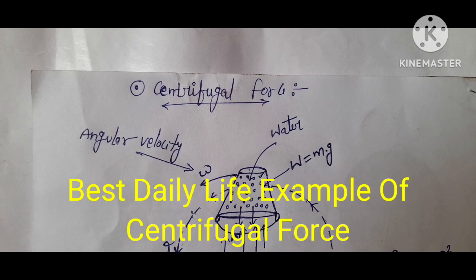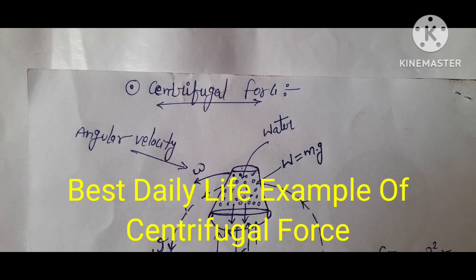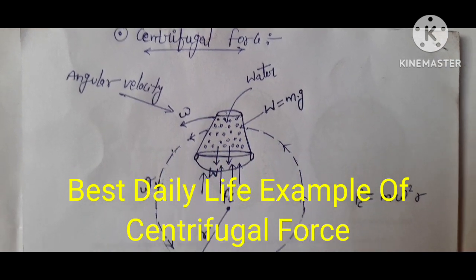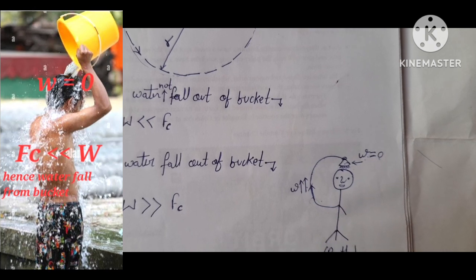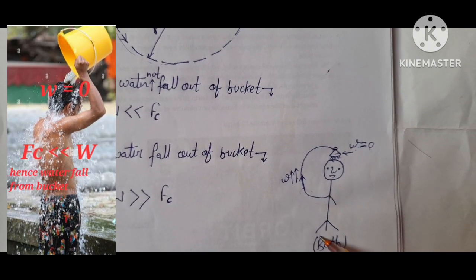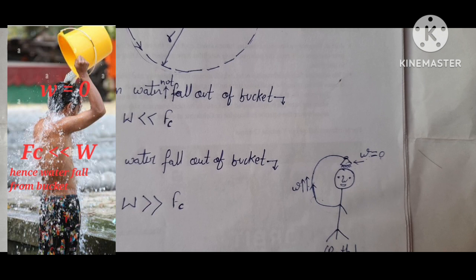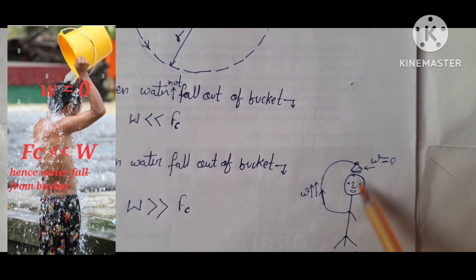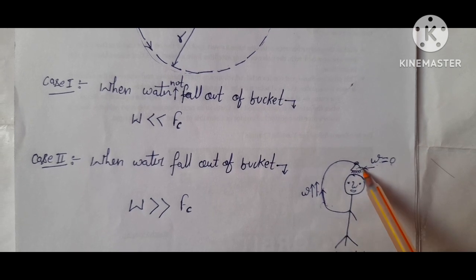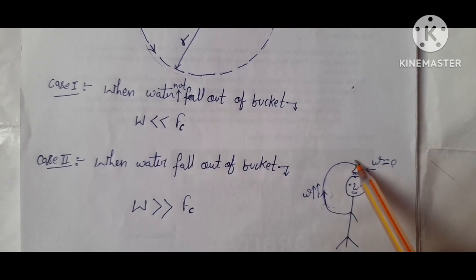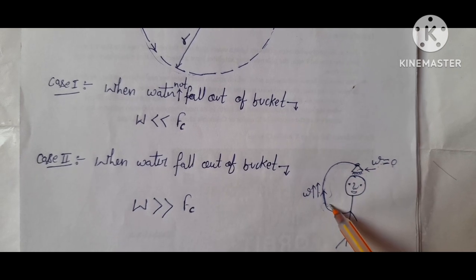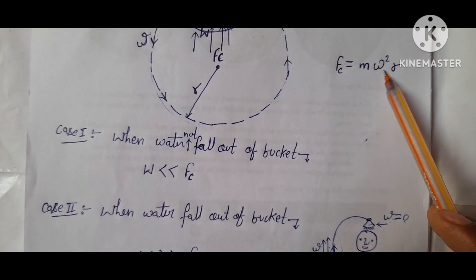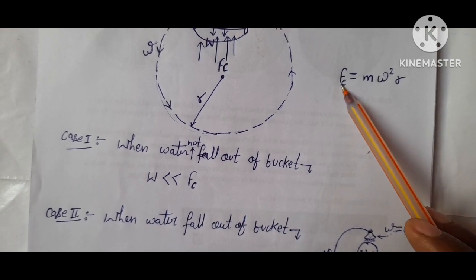We are talking about centrifugal force with a daily life example. Assume this boy wants to carry water with a small bucket. If the boy carries this bucket from here to here, in this path the omega value is high, so it means centrifugal force is high.